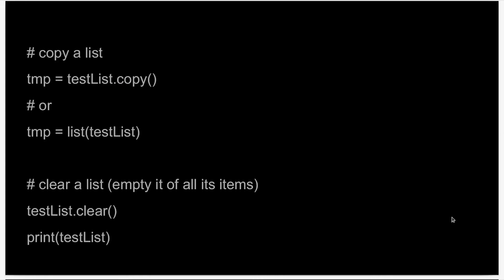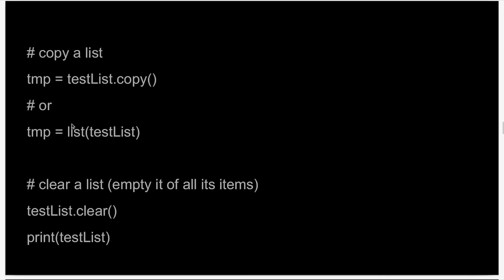Copying a list is not as simple as writing the name of the new list equal to the old list, because that will create a reference of the old list and might lead to problems later on in your code. Instead, you write the name of the new list equal to the name of the old list dot copy parenthesis. You have to remember to use this dot copy method, otherwise it might cause problems. Copying a list can also be done by using the list method: write the name of the new list equal to list, and in parenthesis, you can pass the old list.